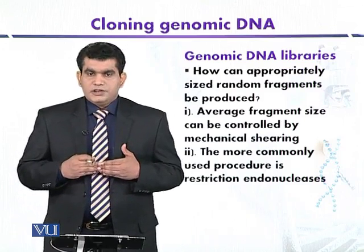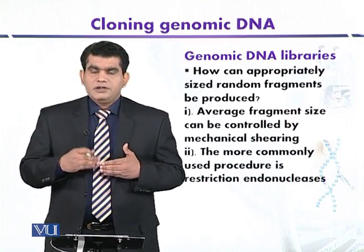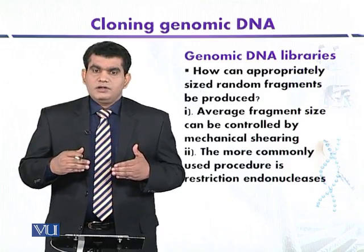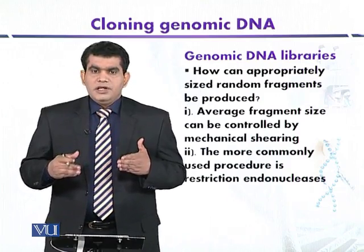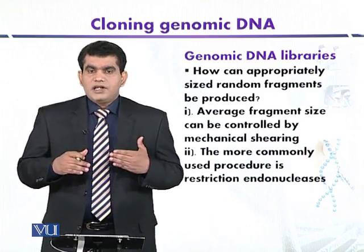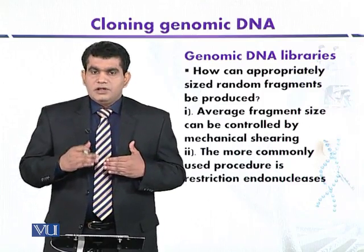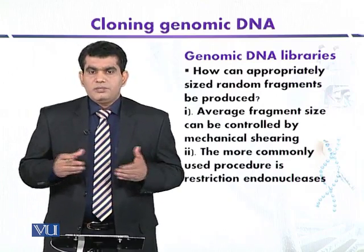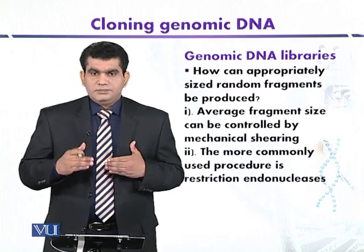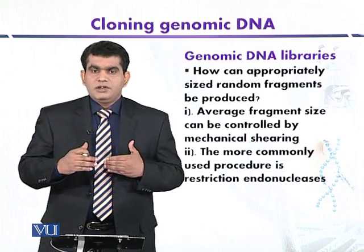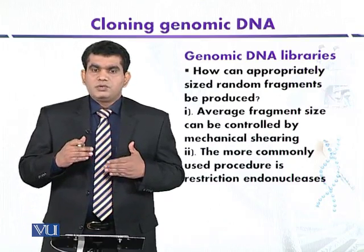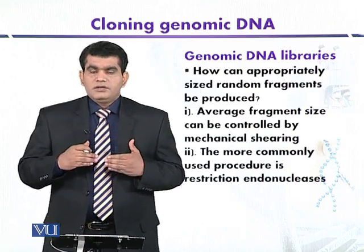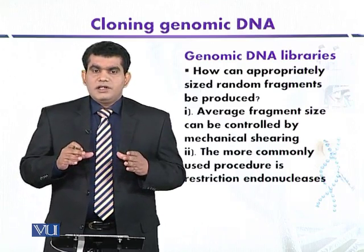Another strategy was devised by Maniatis and co-workers to generate a DNA library. In this strategy, the genomic source DNA is digested with two restriction enzymes, EcoRI and AluI. These enzymes generate blunt ends. Complete digestion produces very small fragments of around 1 kilobase, so partial digestion is allowed — meaning low incubation time — so that the enzyme cleaves less and we obtain larger DNA fragments of around 20 kilobase.